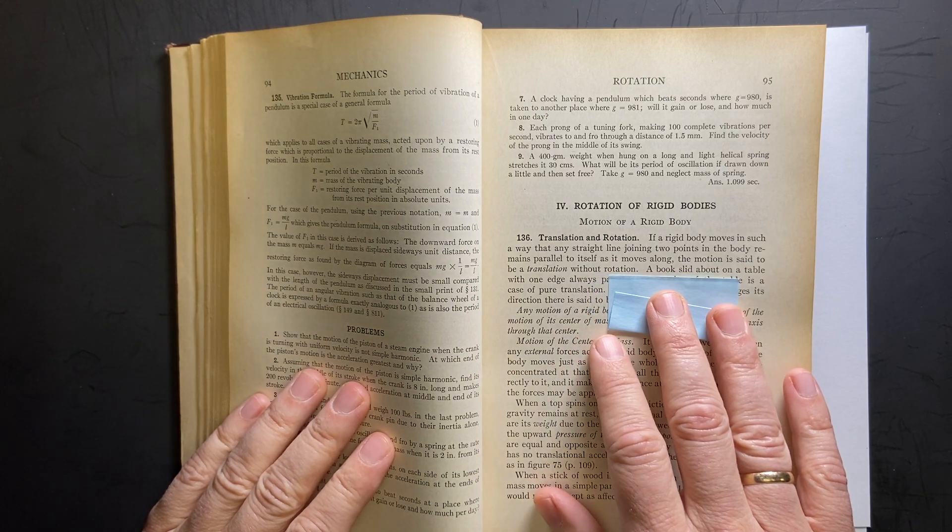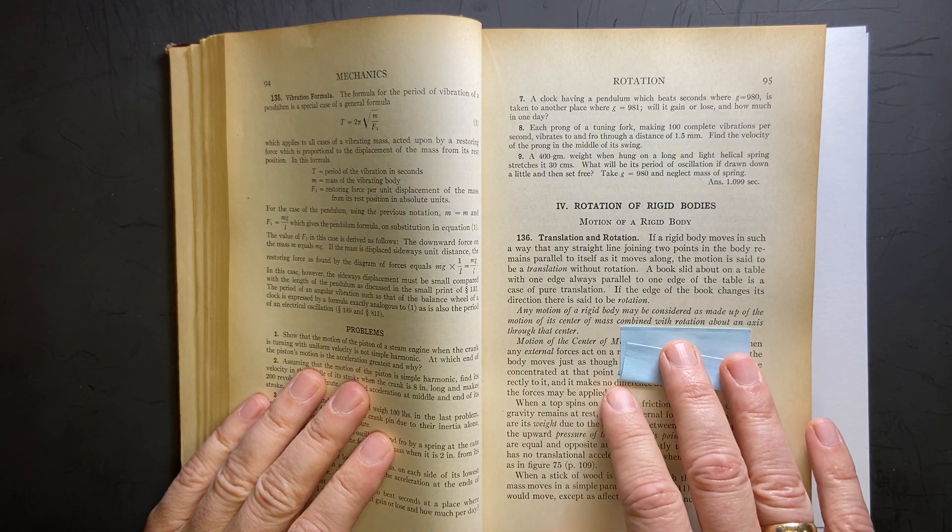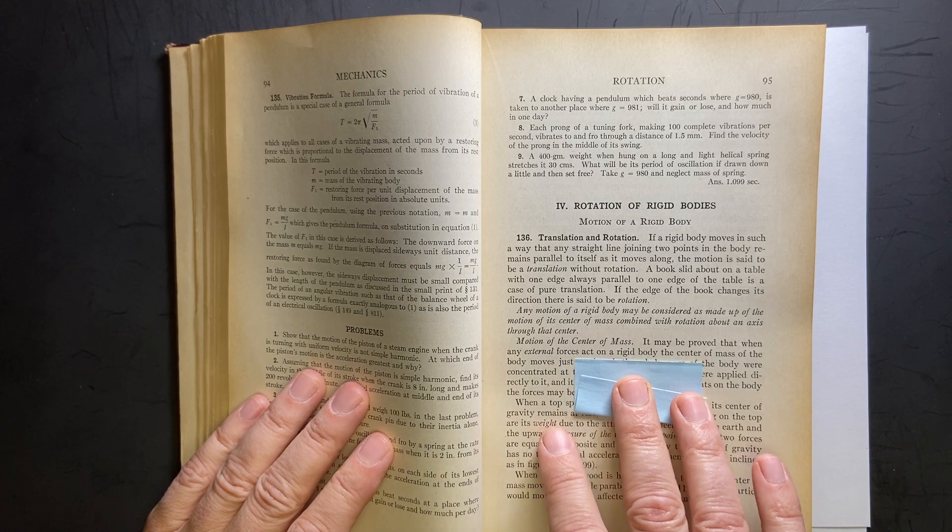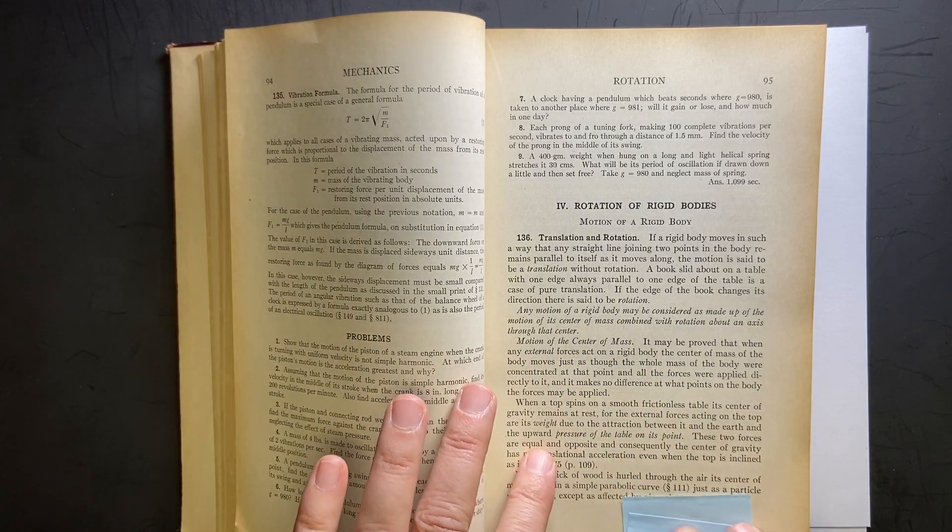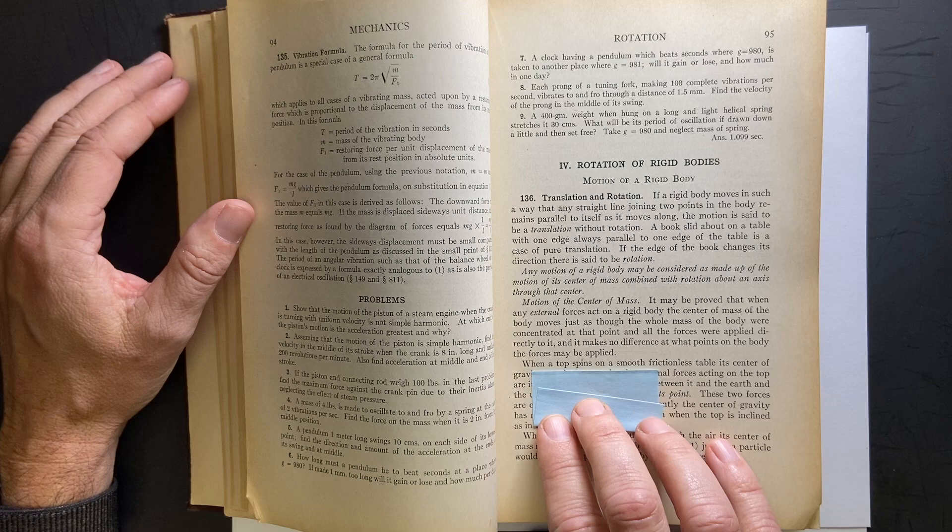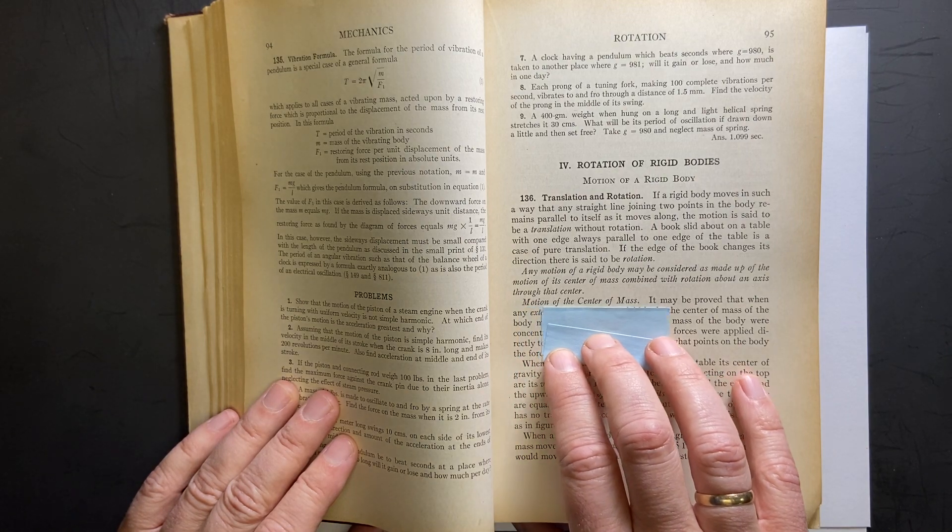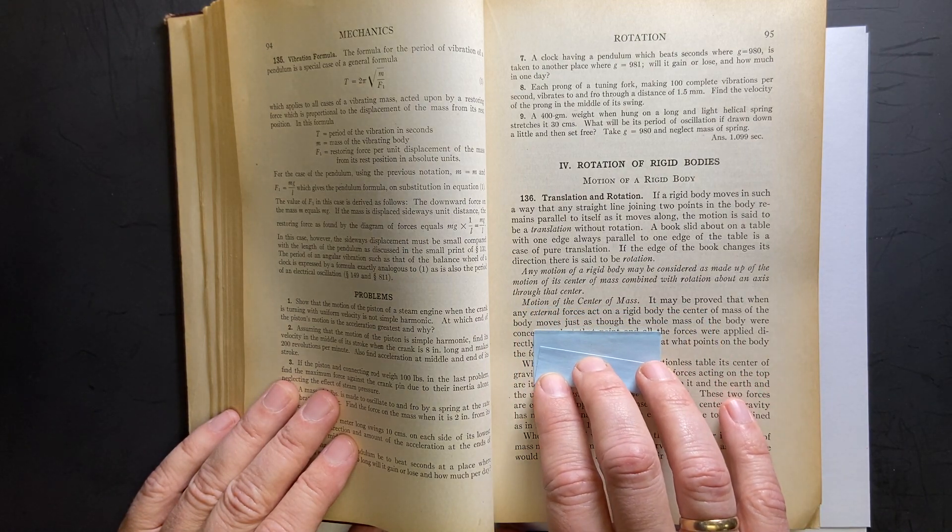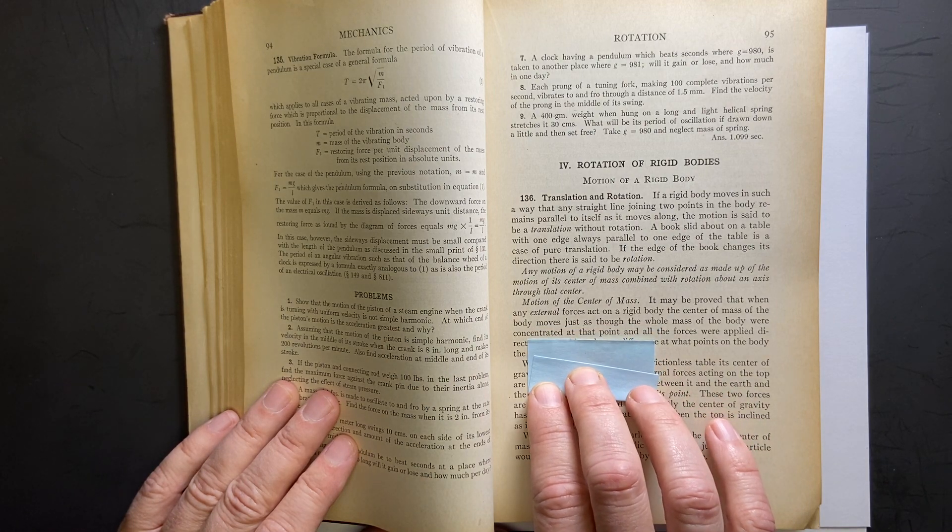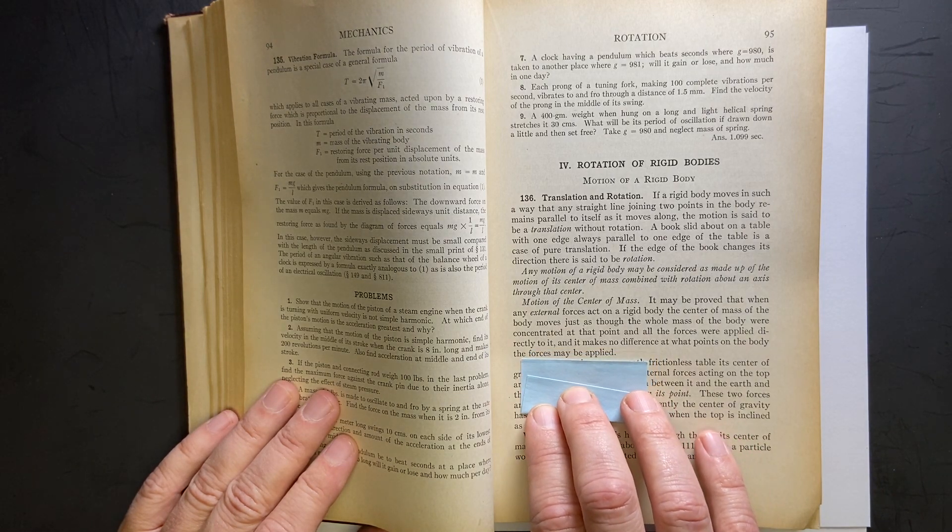The first thing they talk about here is that any motion of a rigid object may be considered is made up of the motion of its center of mass combined with the rotation about an axis through that center. That's pretty good. I like that. Motion of the center of mass. External forces as though they were acting at a point, I think it talked about. Okay, this is it. Look at this. They talk about the example of a top, a spinning top. When a top spins on a smooth frictionless table, its center of gravity... Oh, they did... Here, it's center... motion of the center of mass. So, this says that the motion moves just as though the whole mass of the body were concentrated at that point and all the forces were applied directly to it and it makes no difference at what points on the body the forces may be applied.